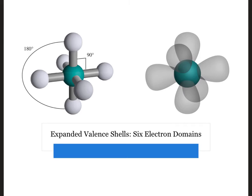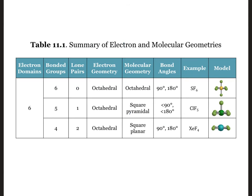If we have six electron domains, they will take on an octahedral shape. The bond angles between adjacent electron domains are all 90 degrees, and like the trigonal bipyramidal structure, we can see additional molecular geometries when lone pairs are present.